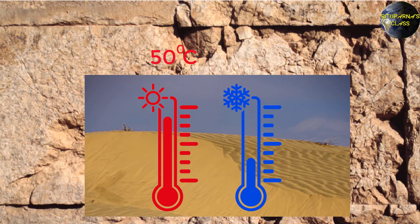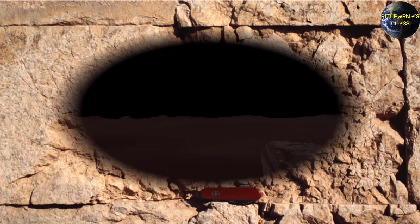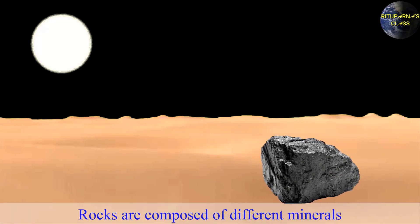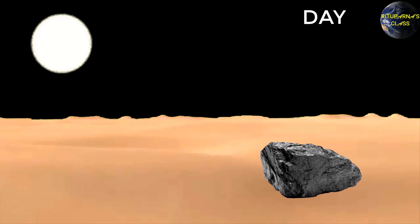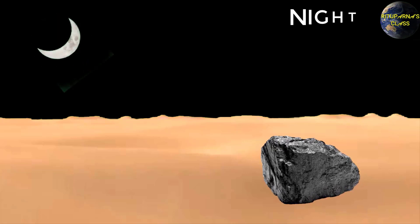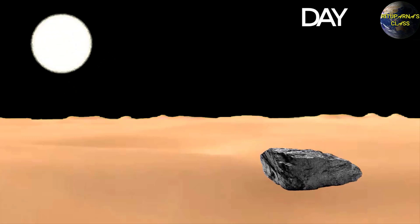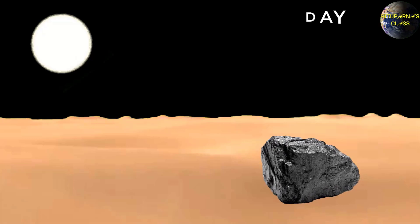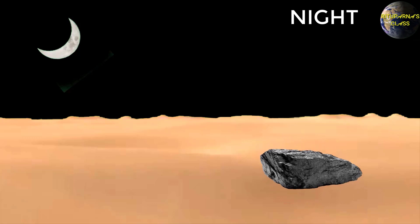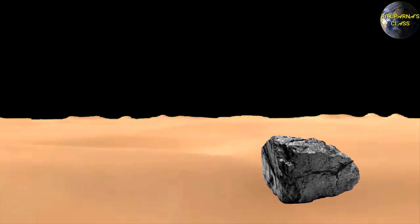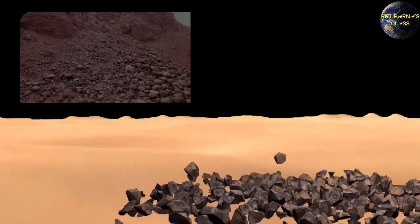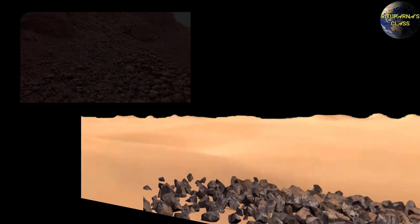For example, daytime temperature may be 50 degrees centigrade and nighttime temperature only 5 or 10 degrees centigrade. Rocks are composed of different minerals, so during daytime rocks expand as the minerals within them expand. But during nighttime the rocks shrink as the minerals within them shrink. After a certain period of time, rocks become weak and their grains loosen and fall out because of this alternate heating and cooling.